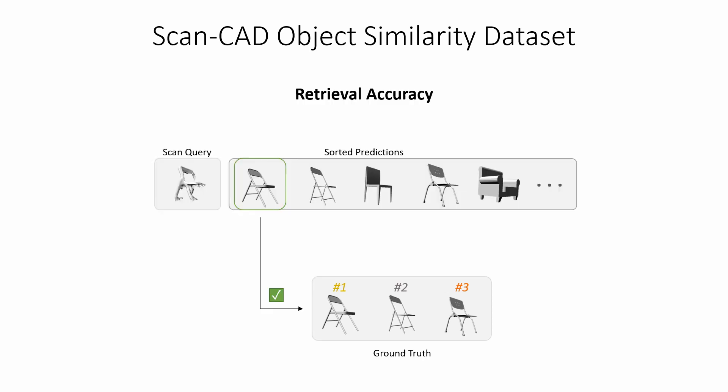From this dataset, we can define finer-grained CAD model retrieval scores. We define retrieval accuracy as whether the top one prediction from the set of 106 CAD models for a scan query was in the set of user-selected CADs. We also measure the ranking quality by comparing the order of the first predicted elements to the order of the user annotation.